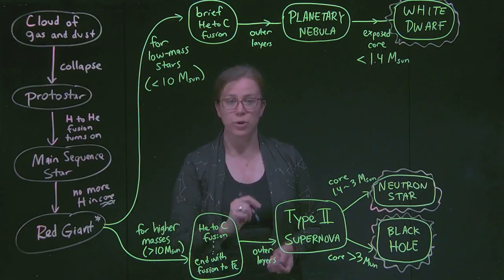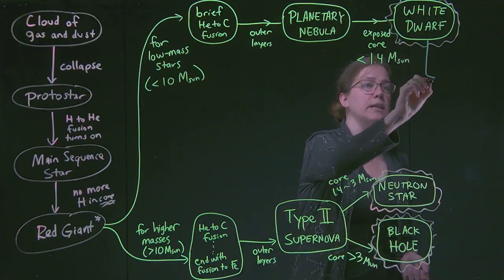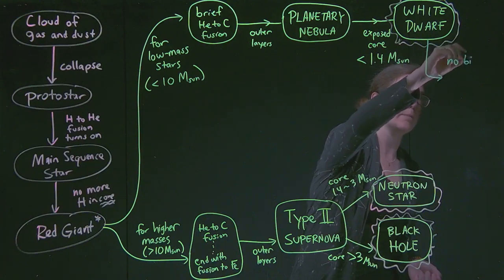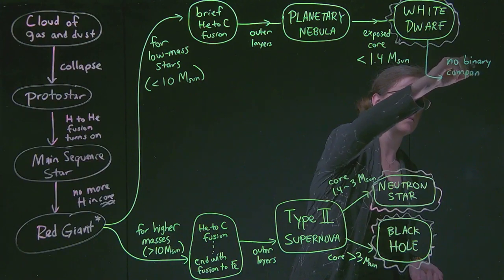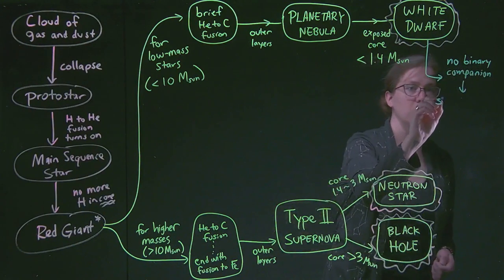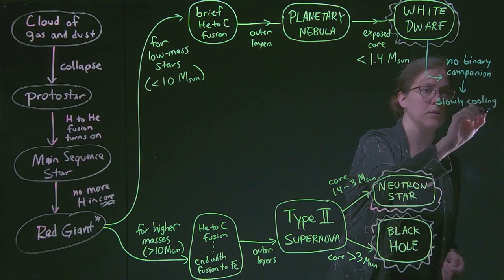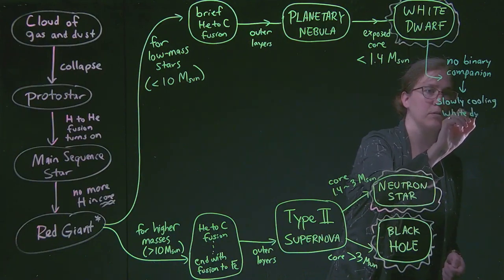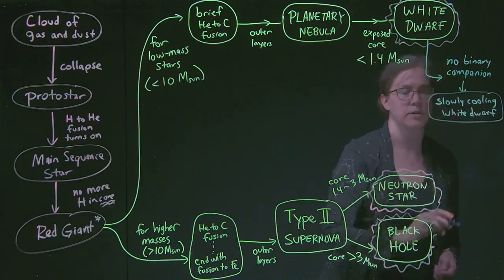So we're going to start with the white dwarf track. For a white dwarf, if it is without a companion, so no binary companion, then it will slowly cool. It'll be a slowly cooling white dwarf. And that will be what it does. And that's what the sun is going to do for eternity.